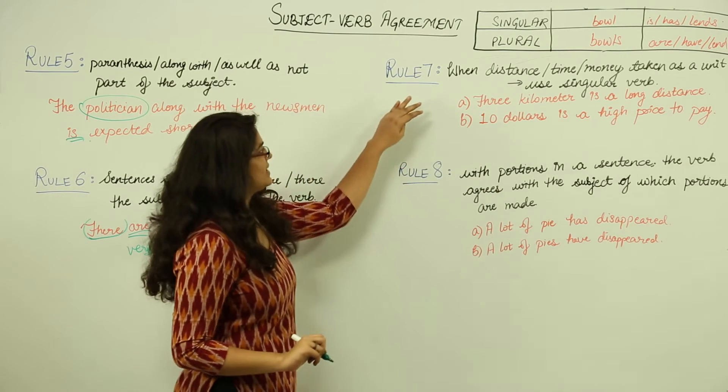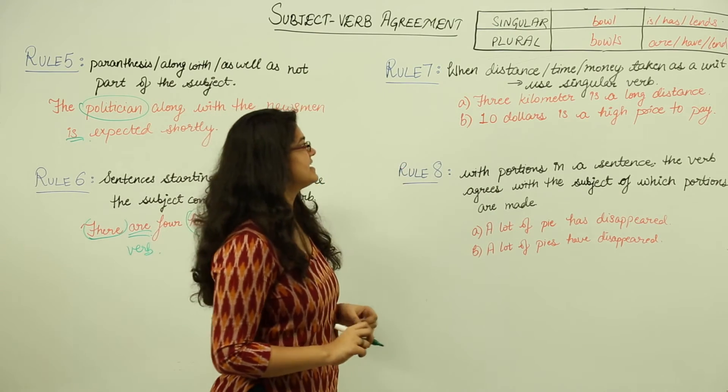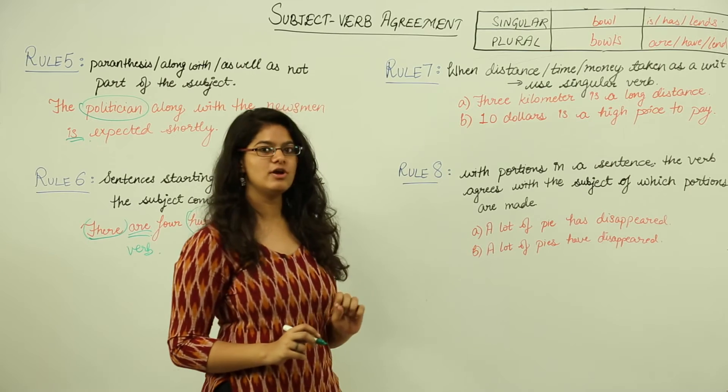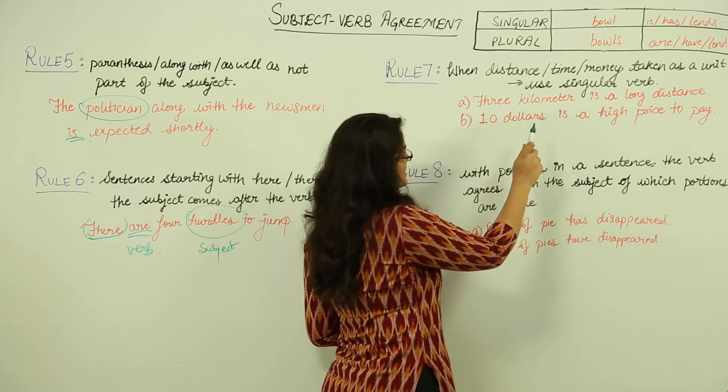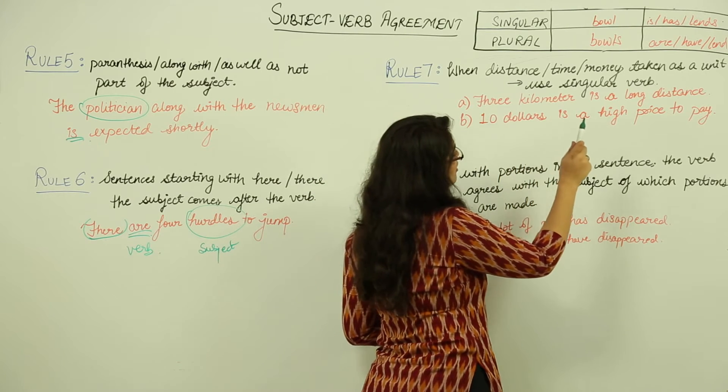Next, when distance, time, money is taken as a unit, we use a singular verb. Here let's read the sentence: Three kilometer is a long distance. When we are talking about kilometers,